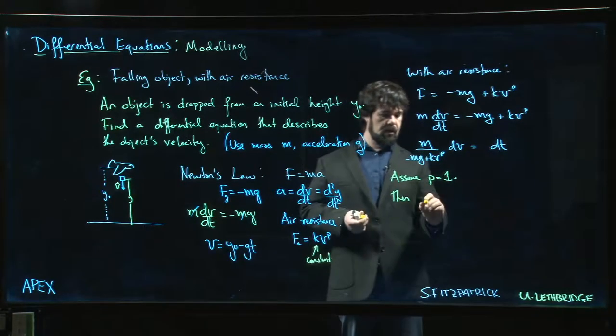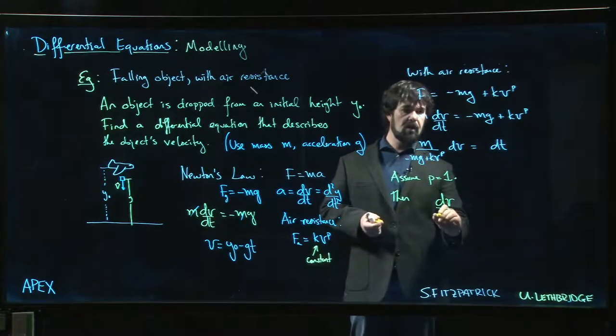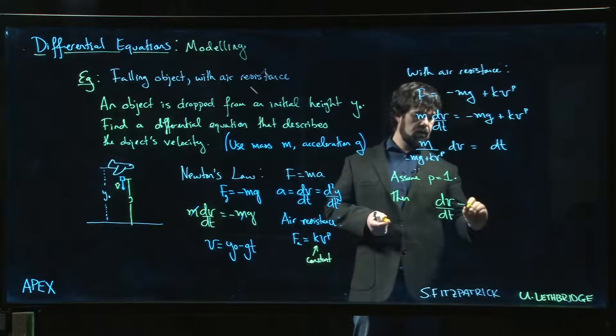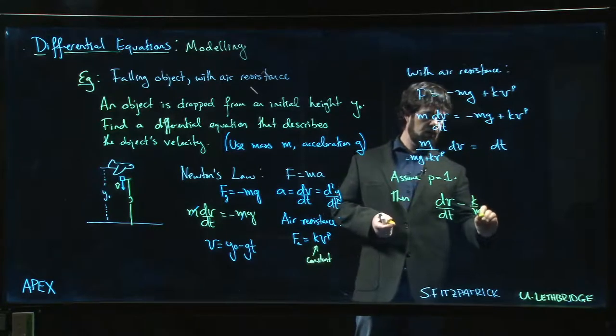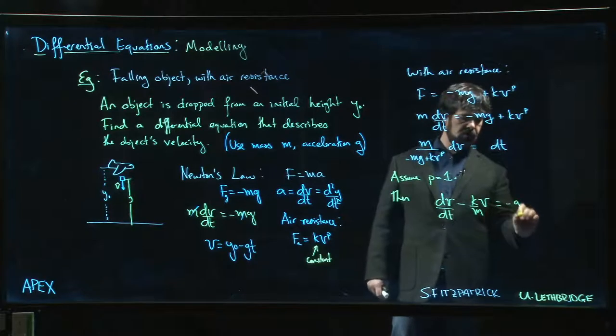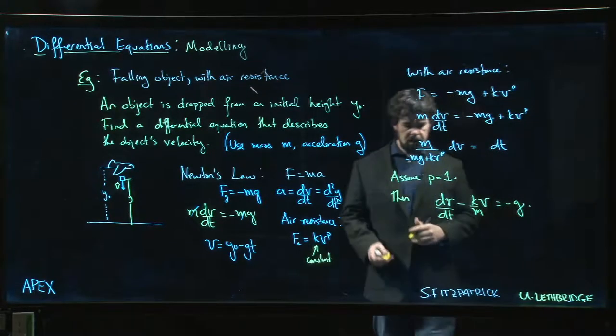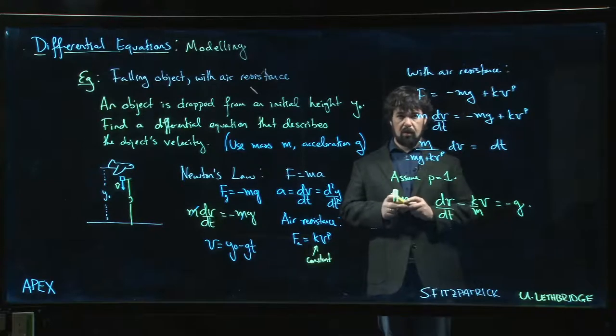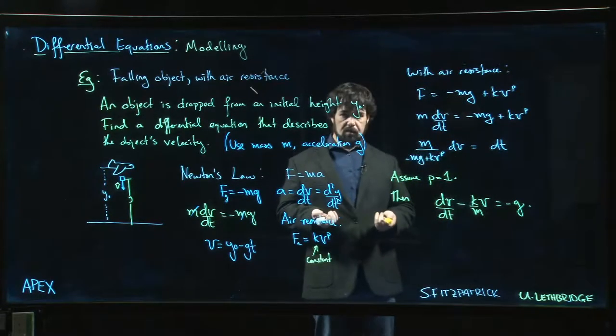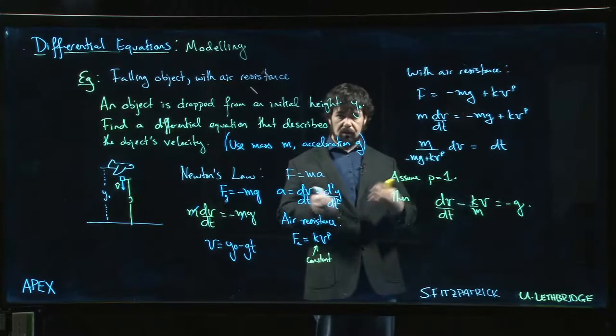Then we get, if I divide through by the mass of the object, dv/dt - k/m v = -g. That's the problem we know how to solve. We know what to do with that. We can put in our integrating factor, go through, and solve. We've got fair experience with this now.